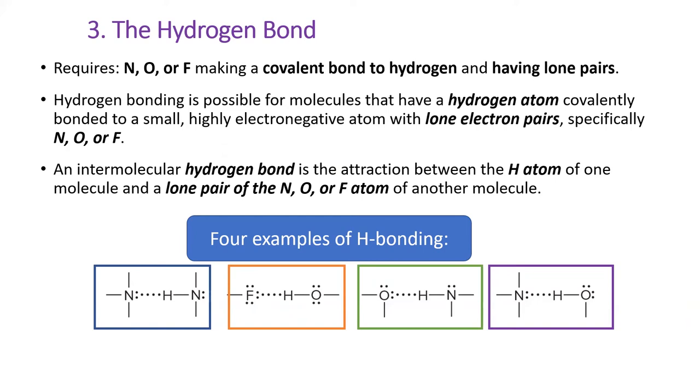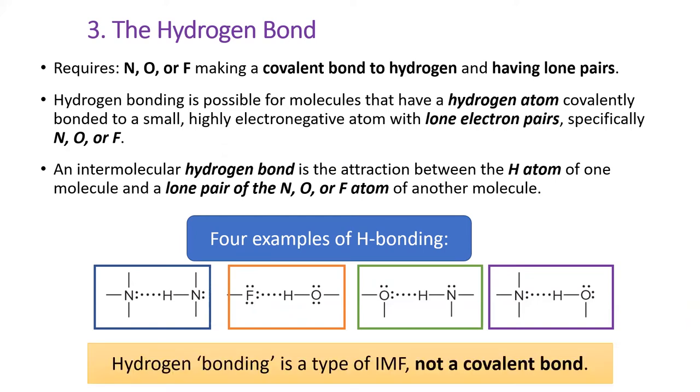Notice that in each of the four examples below, the hydrogen is bonded to a nitrogen, oxygen, or fluorine, and it is attracted to a lone pair on an adjacent molecule. Even though hydrogen bonding uses the word bonding in its name, it is not a covalent bond. It is a type of IMF.